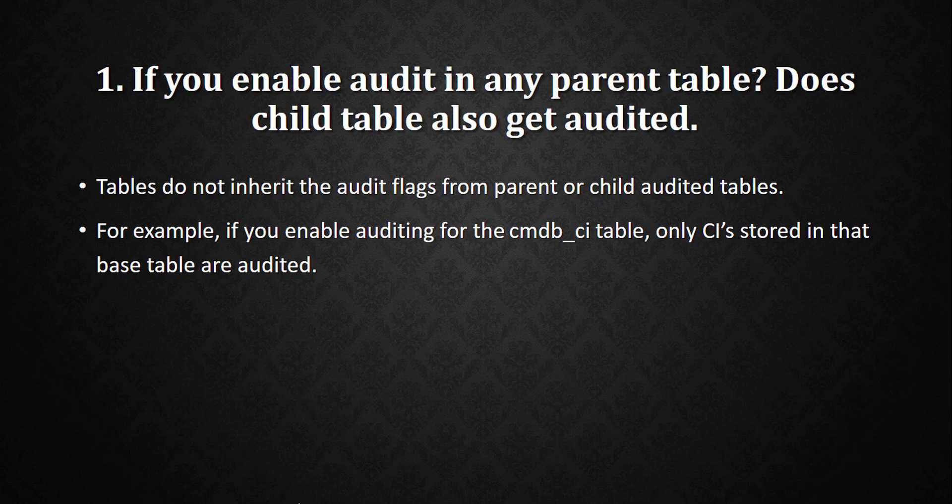The first question is: if you enable audit on any parent table, does the child table also get audited? If you go to the table dictionary, you'll see a checkbox called 'audit'. The answer is no — tables do not inherit the audit flag from parent tables. For example, if you enable auditing for the CMDB CI table, only CIs stored in that base table are audited. Child tables like CMDB CI Hardware or Server, which extend CMDB CI, do not get audited automatically — you have to check the audit checkbox on each child table itself.